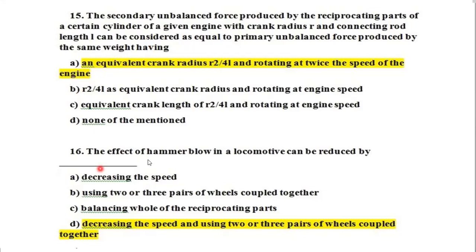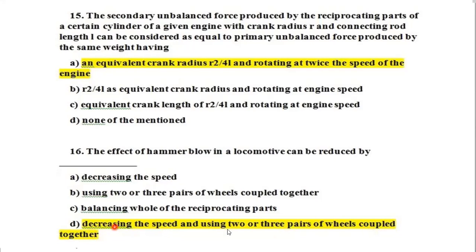Question 16: The effect of hammer blow in a locomotive can be reduced by decreasing the speed and using two or three pairs of wheels coupled together. Only by decreasing speed and using two or three pairs can hammer blow be reduced.